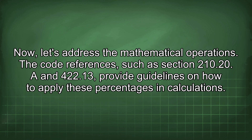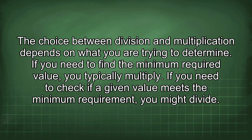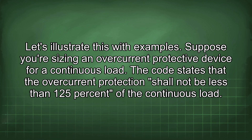Now let's address the mathematical operations. Code references such as section 210.20 and 422.13 provide guidelines on how to apply these percentages in calculations. The choice between division and multiplication depends on what you are trying to determine. If you need to find the minimum required value, you typically multiply. If you need to check if a given value meets the minimum requirement, you might divide.